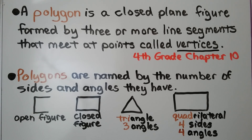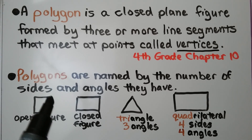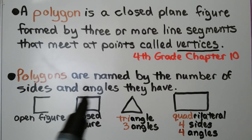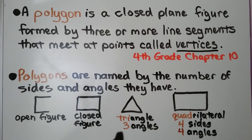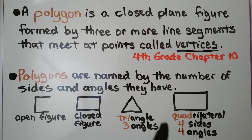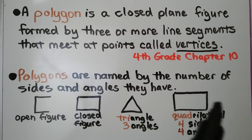Polygons are named by the number of sides and angles they have. This is an open figure because we can see it's open. This is a closed figure. A triangle has three angles and also three sides: one, two, three. And a quadrilateral has four sides and four angles.